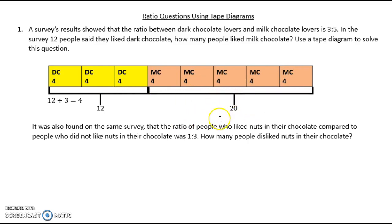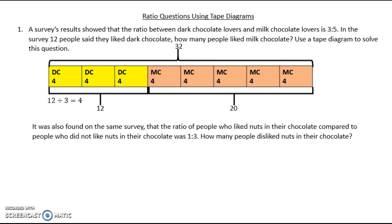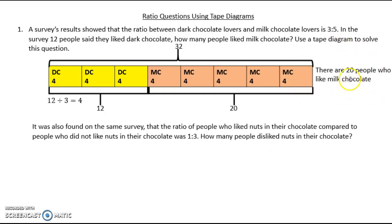At this point I've answered my first question — there are 20 people who like milk chocolate. But in order to answer the next question I need to go just a little bit further: figuring out the total number of people asked. In this case it's 32 — that's 12 plus 20. So 20 people like milk chocolate, and this 32 is going to become important in the next part.